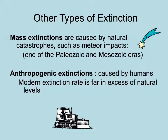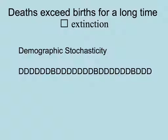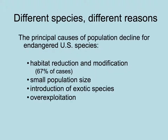What's really been happening a lot in the last 500 or more years are anthropogenic extinctions — those caused by humans — and they are what make the modern extinction rate far in excess of natural levels. Looking at this demographically, any time deaths exceed births for a long period of time, that can lead to extinction in a process called demographic stochasticity, which has led to the extinction of different species for different reasons.